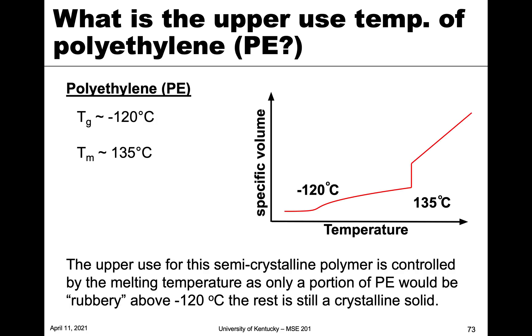As an example, polyethylene has a Tg of minus 120°C and a Tm of 135°C. So when we use polyethylene, we're using it above minus 120°C but below 135°C. We use it in this region where we still have mechanical integrity but it's no longer glass-like. This illustrates the connection between crystallinity and modulus — and clearly, polyethylene is used somewhere in that middle region, well above minus 120°C but below the melting point.